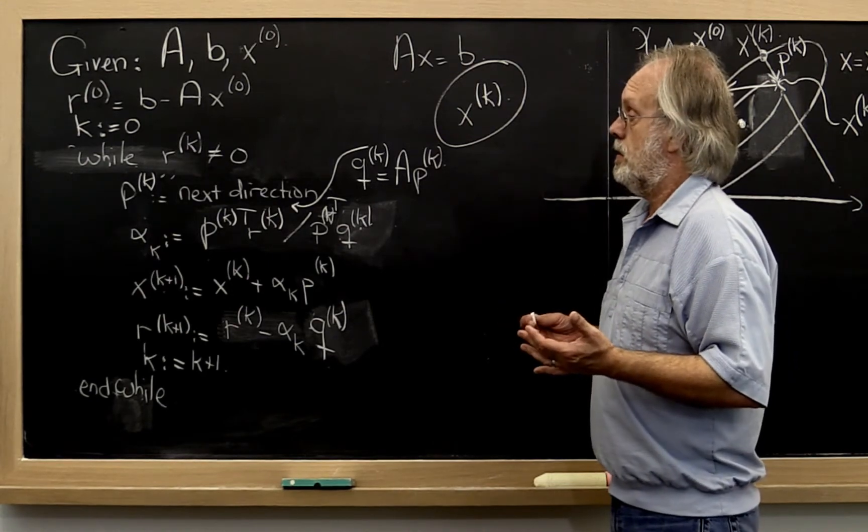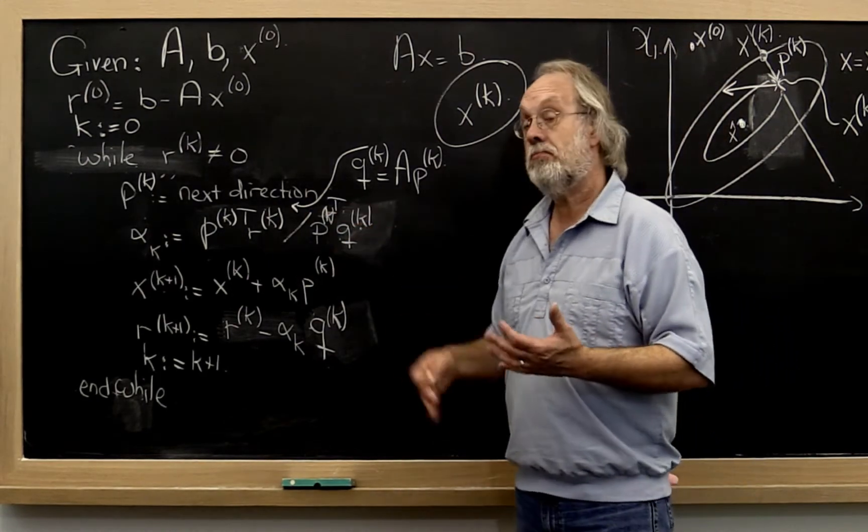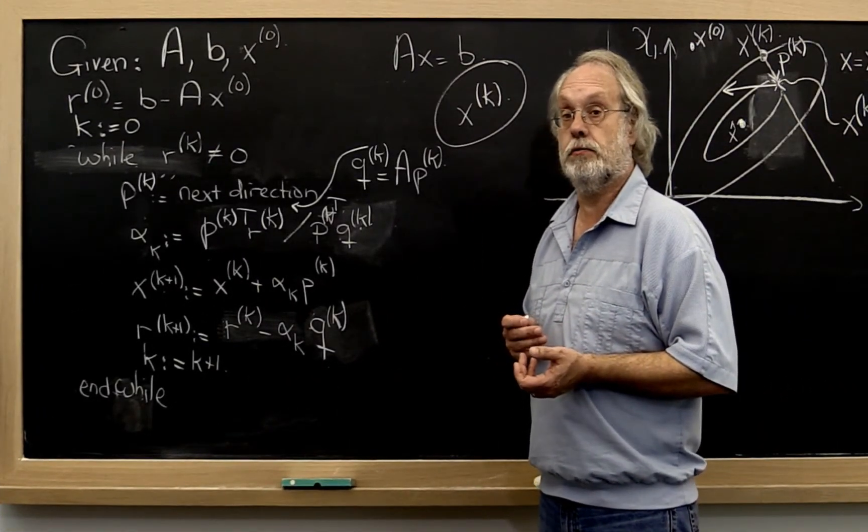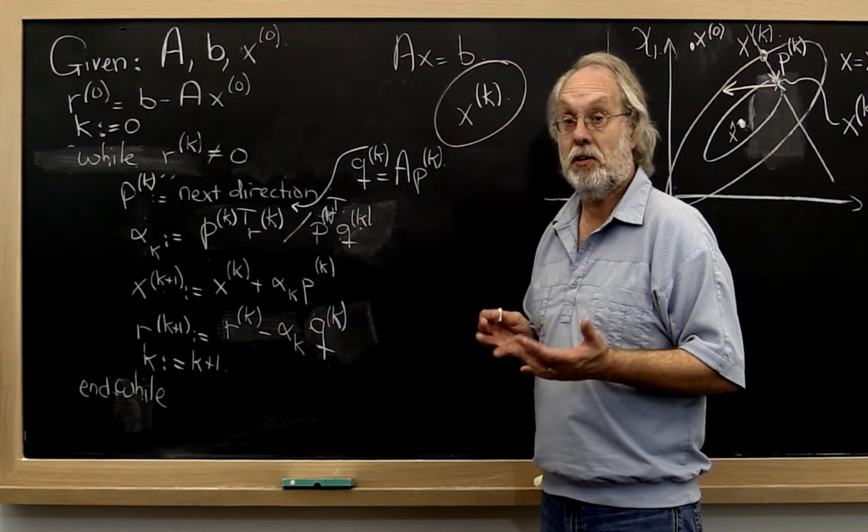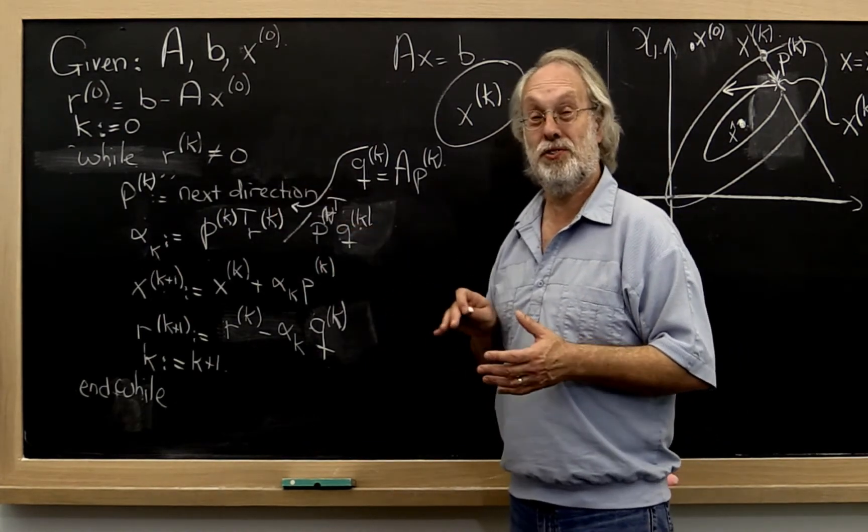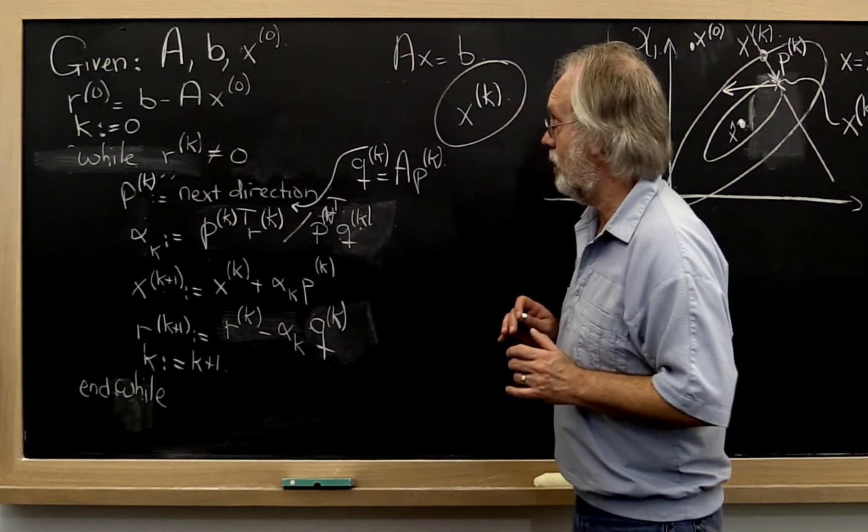Or we just want to pick them conveniently. Well, what's the most convenient vector you can think of? You might think the zero vector, right? But if you pick the zero vector for your search direction, you're not going to get very far. So let's skip that one.